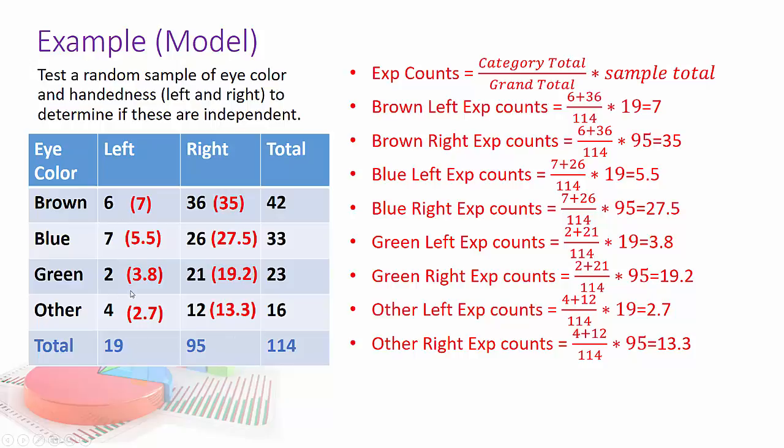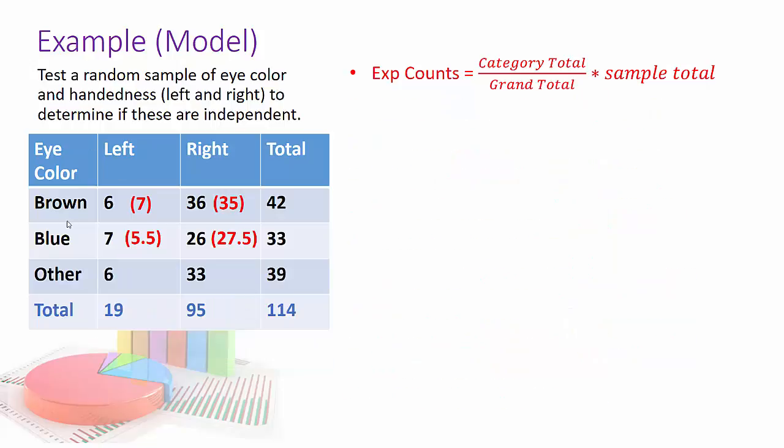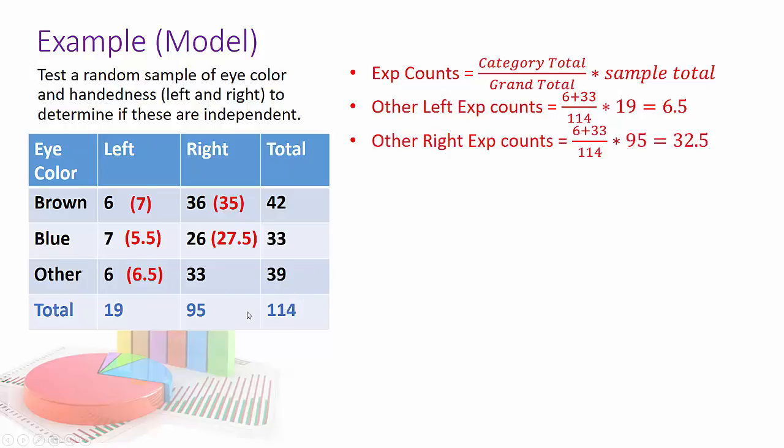Well, if you look through all the expected counts, I've got a problem right here and right here. Both of these values are not greater than or equal to 5. So I haven't met my counts condition. But there is a solution. I could change this so I can combine categories. I can combine green into the other category. So here's my new table, and my values for brown and blue are going to stay the same. So I just need to calculate new other values. So it's going to be 39 divided by 114 times 19, which is 6.5. So that's met now. And that will be 39 divided by 114 times 95, and that's 32.5. So we've met, first of all, the categories are counts. I've met the greater than or equal to 5 condition, and it was given that it was random. So now we can proceed with our calculation.